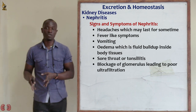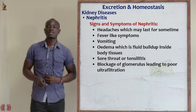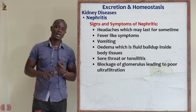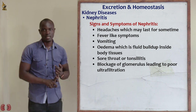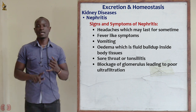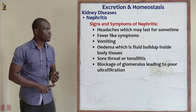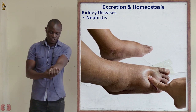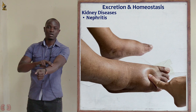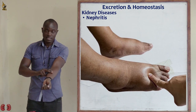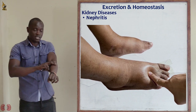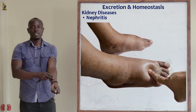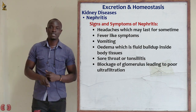What are the signs and symptoms of nephritis? The first is headache and fever, because there is too much urea and toxins in the blood when the glomerulus is not functioning. Apart from that, there is vomiting. There is also edema, where the tissues of the body feel spongy, with traces of fluid under the skin tissue. A person like that is likely suffering from nephritis.